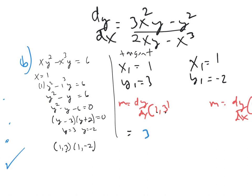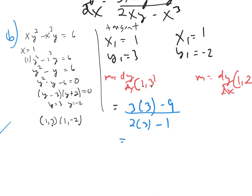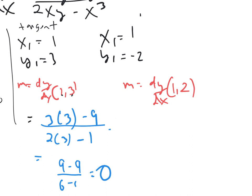Now I put 1 and 3 in for X and Y. That gives me 3 times 1 squared times 3 minus 3 squared — which is 9 — all over 2 times 1 times 3 minus 1 times 1. That gives 9 minus 9 over something, so the whole numerator is 0. The slope at (1, 3) is 0. Did anybody agree with that? Good.